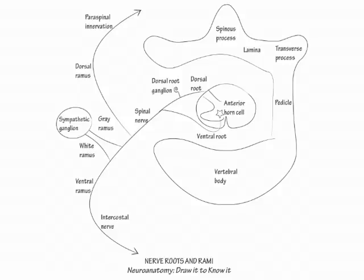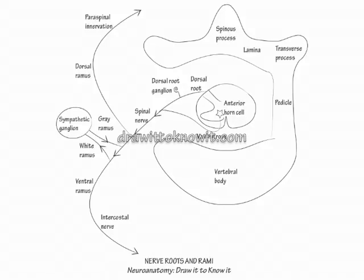Finally, show an impulse travel along the ventral ramus and then up the white ramus to the paravertebral sympathetic ganglion. Then show it pass back down the gray ramus to the ventral ramus. From there, the impulse disseminates either along the dorsal or ventral ramus.